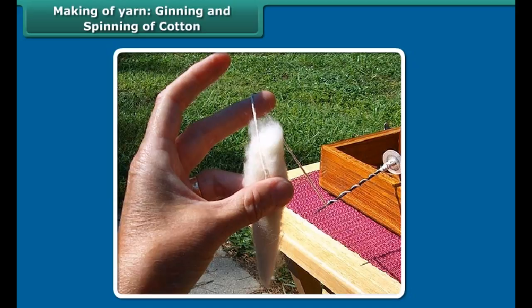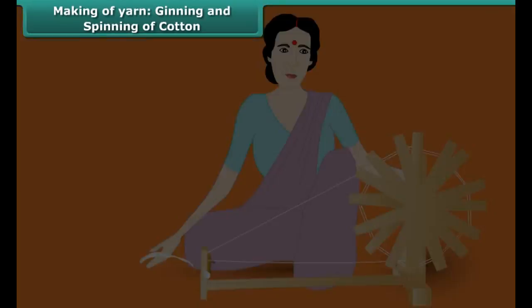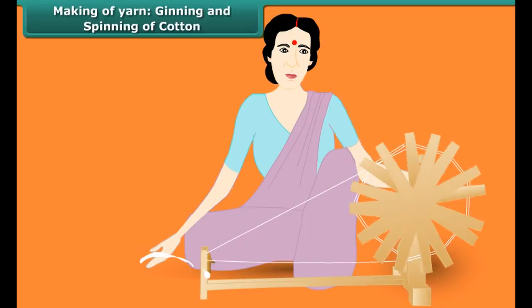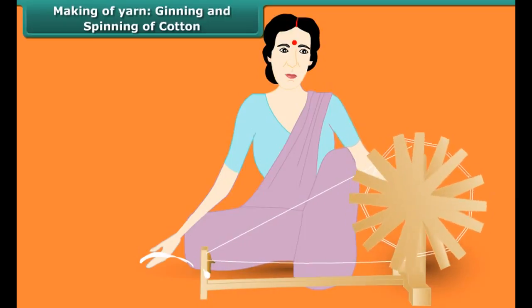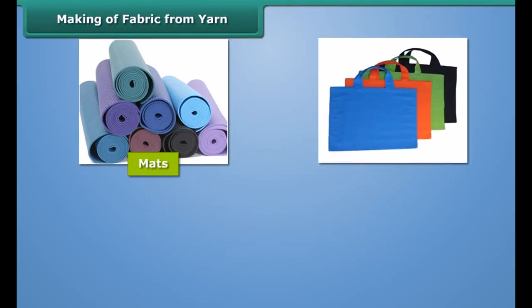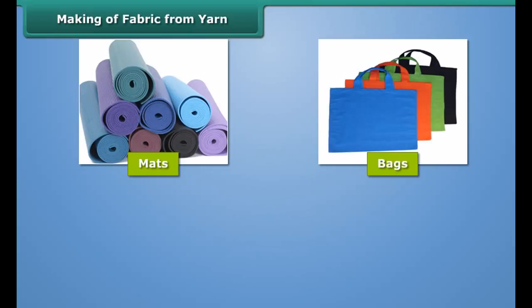Do you know how a yarn of cotton is made? Take some cotton wool and fix one end with a clip. Then fix the other end with another clip. Hold the two clips in your two hands and pull out the cotton. Twist the cotton continuously until it finally turns into a yarn. This simple device used for spinning is a hand spindle called tukli. Do you know about the charkha? It was very popular during the independence movement.